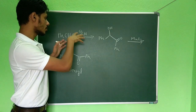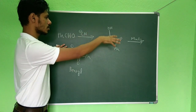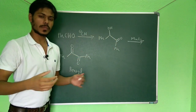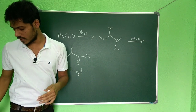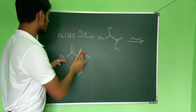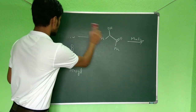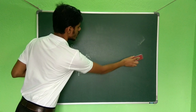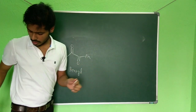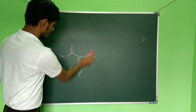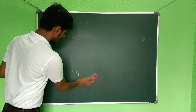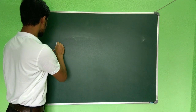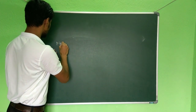To solve this question, you have to know the benzoin condensation, this oxidation step, and then the Benzyl Benzylic Acid Rearrangement. The rearrangement reaction itself is very simple — only sodium hydroxide is needed. Let me draw the structure of benzil again.